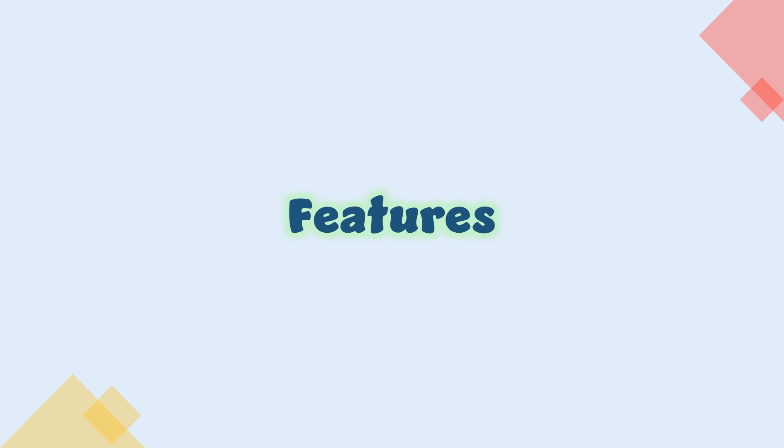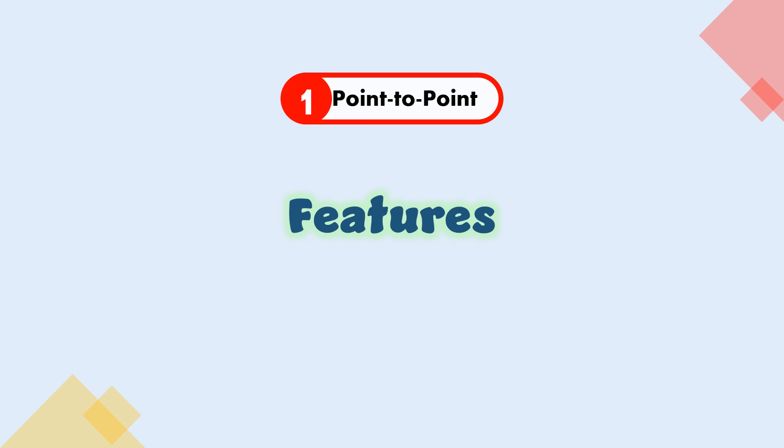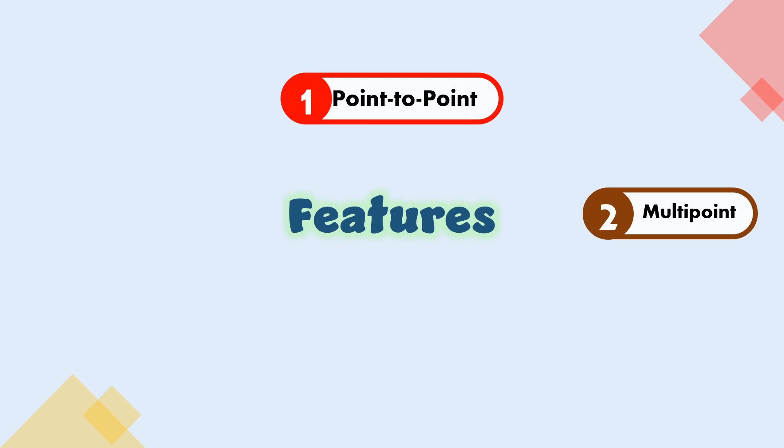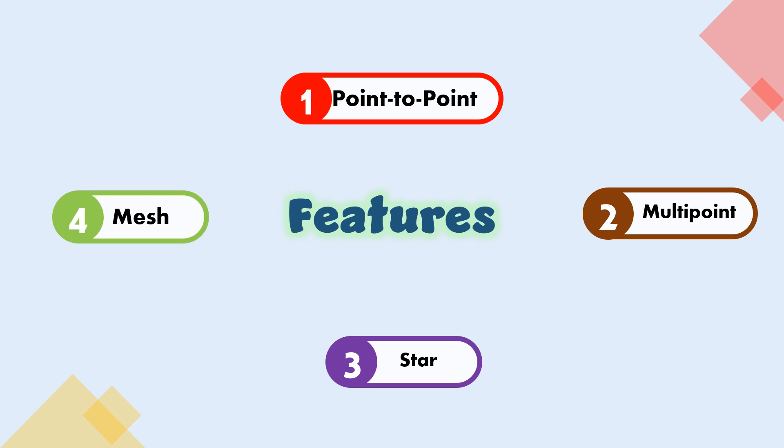Here are some features of different line configurations in computer networks: Point-to-point, Multipoint, Star, and Mesh.